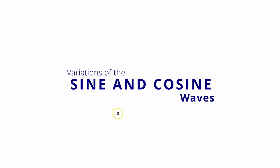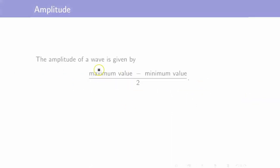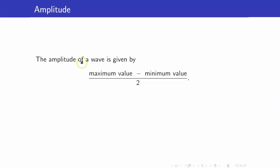In this lesson, we are going to discuss the different variations of the graphs of y equals cosine x and sine x. Before we proceed, let us first discuss the amplitude of a wave.